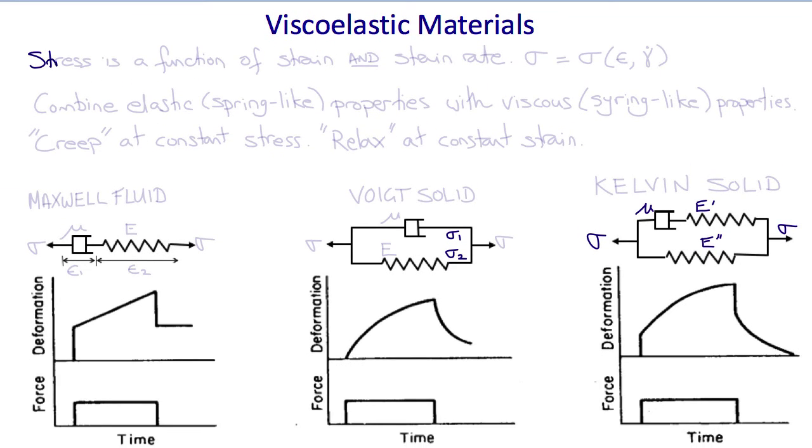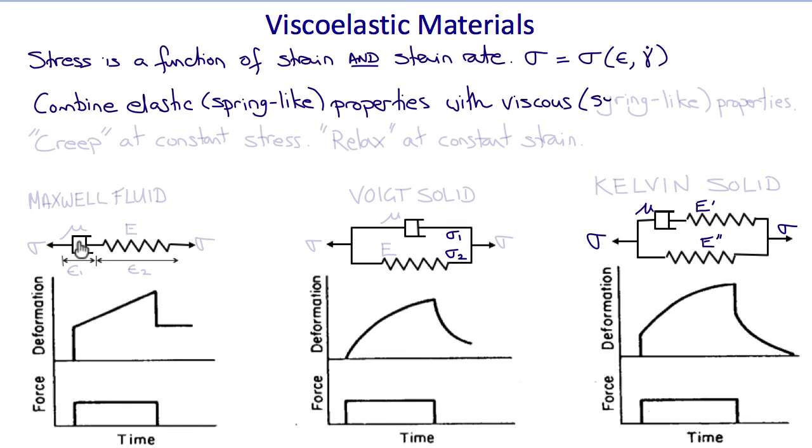A more complicated class of material that's commonly seen in biomechanics is a viscoelastic material, in which the stress is a function of both the strain and the strain rate. Viscoelastic materials combine elastic or spring-like properties with viscous or syringe-fluid-like properties. They exhibit behaviors such as creep at constant stress, so their length doesn't remain fixed at a constant load, and they relax at constant strain, so the amount of force required to hold them at a constant length decreases over time.